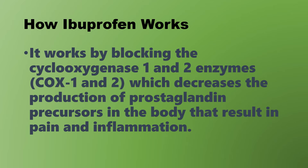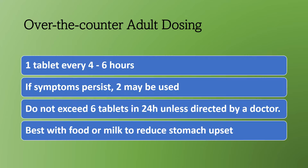So how does ibuprofen work? It works by blocking cyclooxygenase-1 and cyclooxygenase-2 enzymes, often abbreviated COX-1 and COX-2. When we block those, it decreases the production of prostaglandin precursors, and those prostaglandins are responsible for the pain and inflammation that occurs in the body. So by blocking the enzyme, we reduce the pain and inflammation.